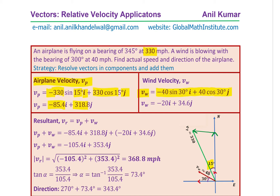So we have now got the two velocities in component forms. It is very easy to add when you write them into components along the x-axis and the y-axis. So we can now add them up to get the resultant Vr. The resultant is basically the sum of the two velocities, so adding the x components together and then the y components together, we get the resultant velocity: minus 105.4 I plus 353.4 J.